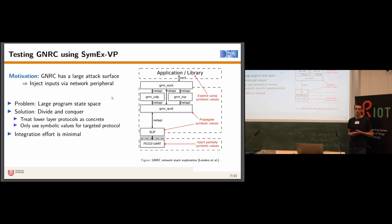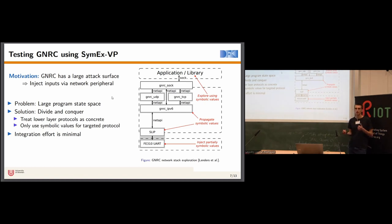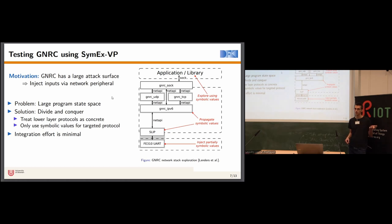To mitigate this problem, we employ divide and conquer — testing individual protocol implementations separately. Since we inject test inputs at the network peripheral level, we treat lower layer network protocols like the IPv6 header or UDP header as concrete values, and only use symbolic values for the actual protocol implementation we want to test. So if we want to test an MQTT-SN implementation, we treat the IPv6 header as concrete, the UDP header as concrete, and have a symbolic UDP payload.